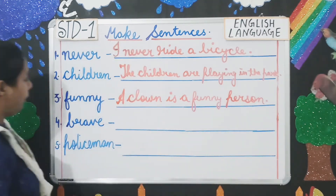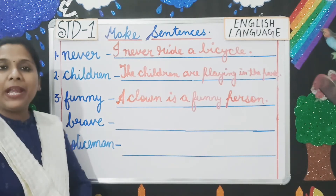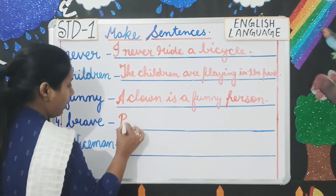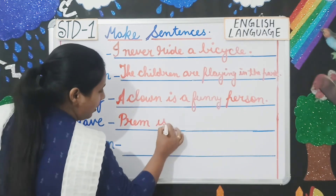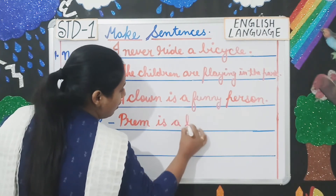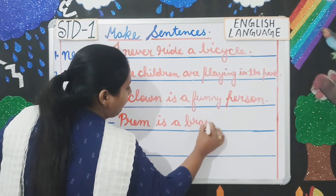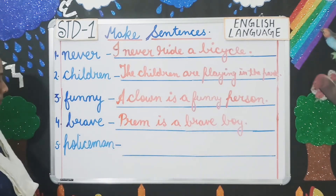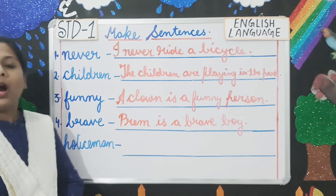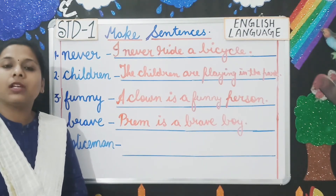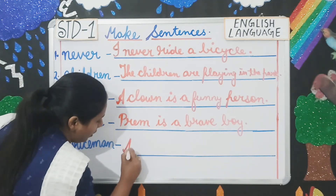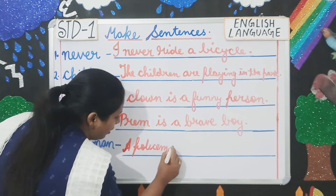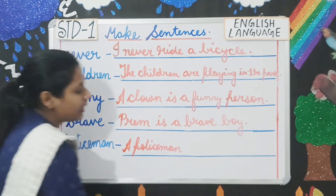Number four — 'Brave': you can write 'Prem is a brave boy.' Number five — 'A policeman': you can write 'A policeman catches thieves.'